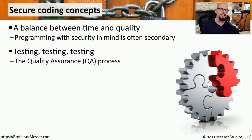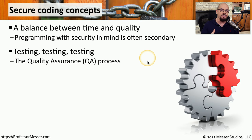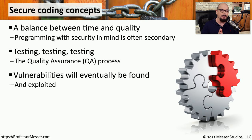A lot of the testing that takes place during an application development process happens with the QA team. This is the quality assurance team that is tasked with not only making sure that the application is working to specification, but also making sure that the application is secure. But even with the best testing, applications can still have vulnerabilities that go unnoticed.